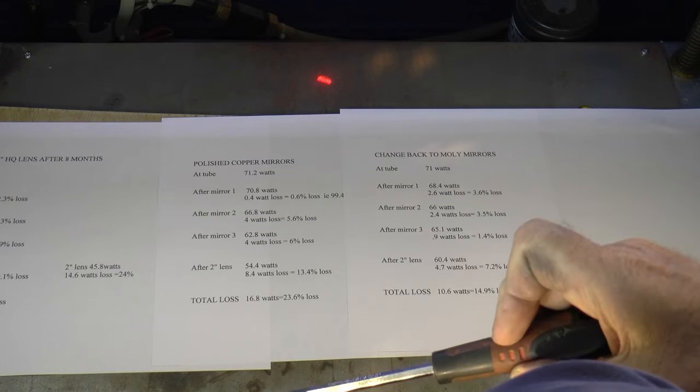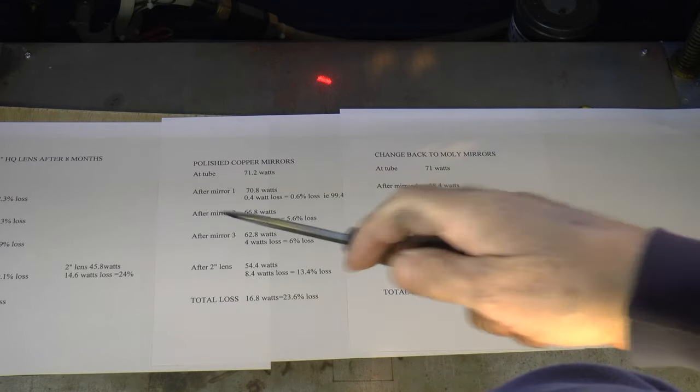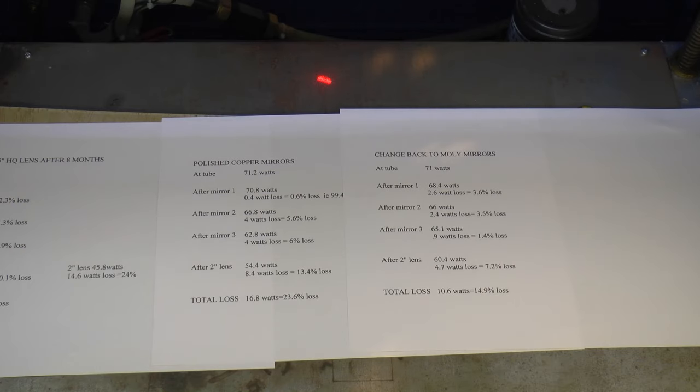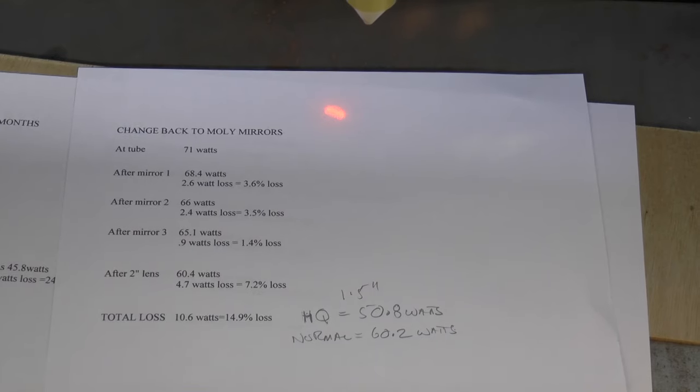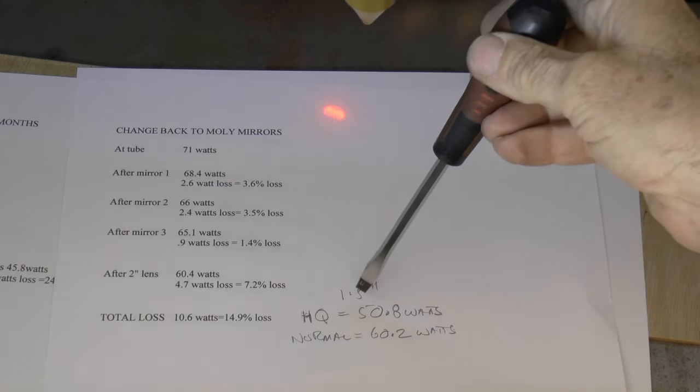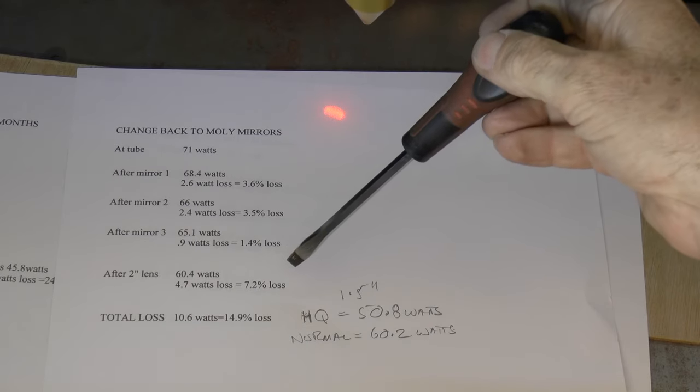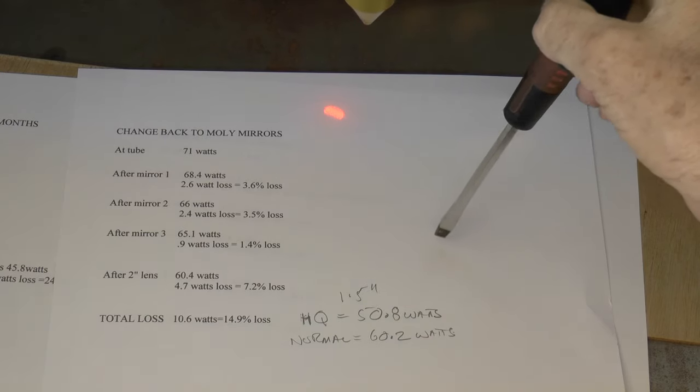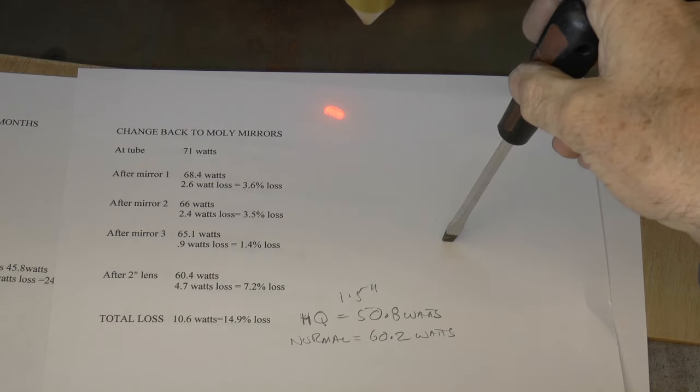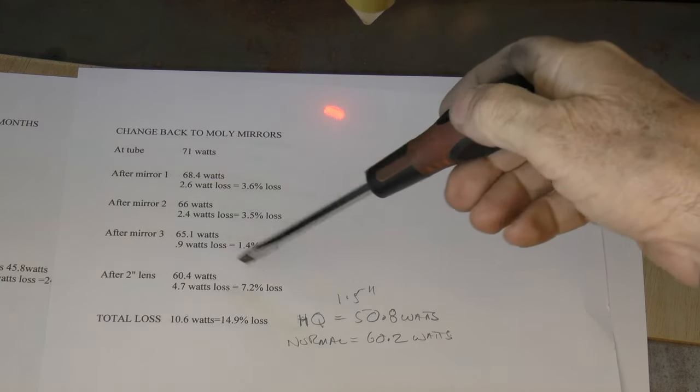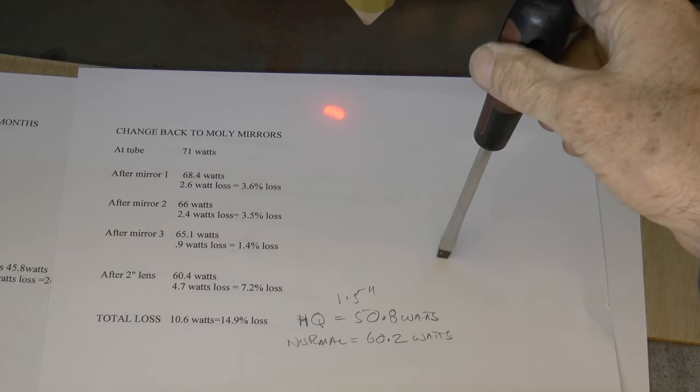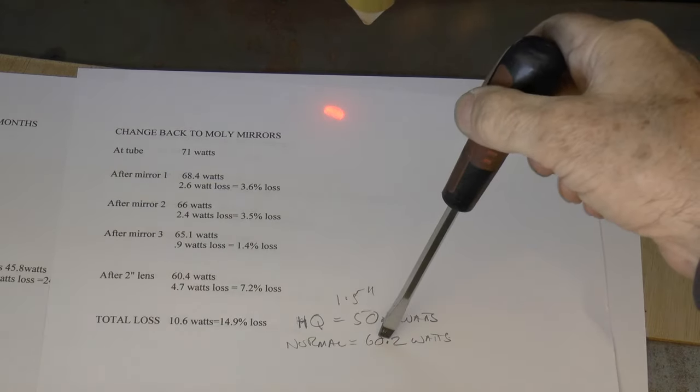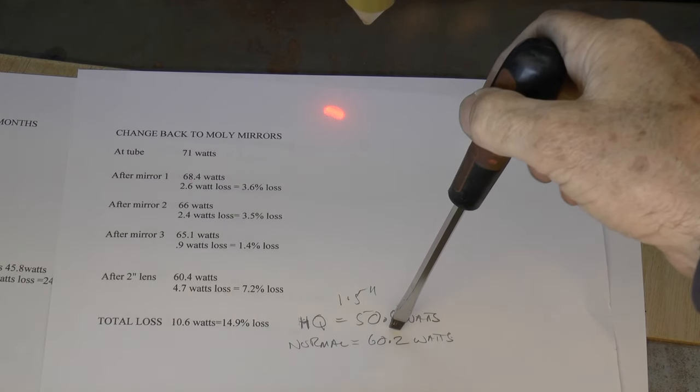So what I'm going to do finally, I'm going to put my HQ lens, which was the 40.1 rubbish lens back in and see what power loss I get across that. Okay well I just put the HQ lens, the one and a half inch HQ lens back in, and well instead of giving me 60.4 watts, it gave me 50.8 watts. So I think that lens is well and truly shot. I did have another normal one and a half inch lens and we didn't look too bad. And in fact when I popped that in, it gave me 60.2 watts compared with that 60.4 watts. So I'm going to leave that one and a half inch lens in while I'm waiting for some new lenses to come.